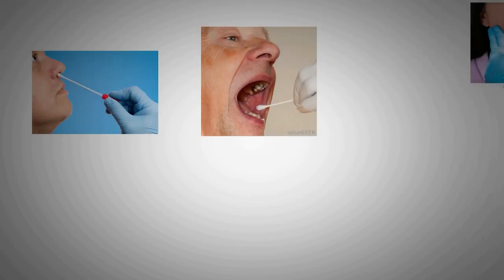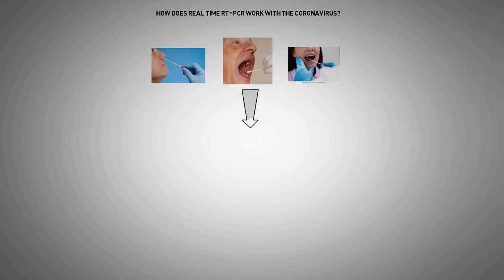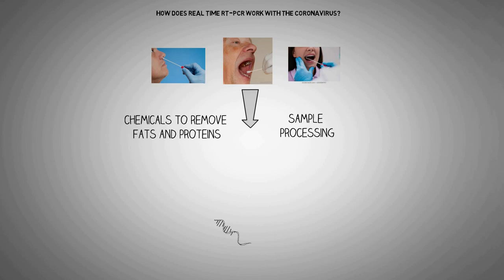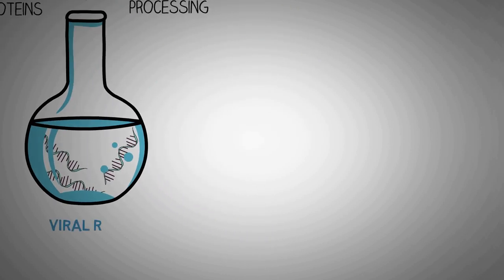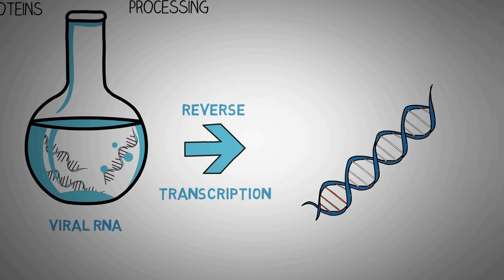A sample is collected from parts of the body where the coronavirus gathers, such as the person's nose or throat. The sample is treated with several chemical solutions that remove substances such as proteins and fats, and extract only the RNA present in the sample. This extracted RNA is a mixture of a person's own genetic material and, if present, the coronavirus's RNA. The RNA is reverse transcribed to DNA using a specific enzyme.